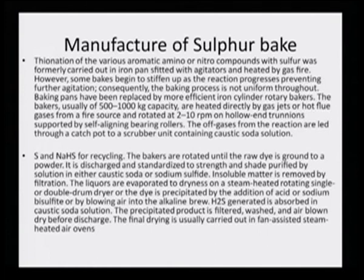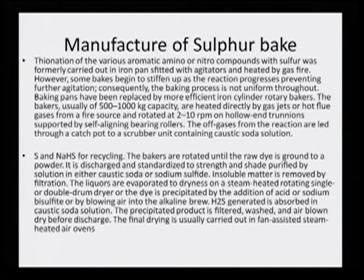The raw dye is discharged and standardized to strength and shade, purified by solution in either caustic soda or sodium sulphite, and insoluble material is removed by filtration. The liquors are evaporated to dryness on a steam-heated rotating single or double drum dryer. The dye is precipitated by addition of acid, sodium bisulphite, or by blowing air into the alkaline brew. Hydrogen sulphide generated is absorbed in caustic soda solution, because it not only creates a bad smell but is harmful to inhale. The precipitated product is filtered, washed, and air-blown dry, and final drying is carried out in fan-assisted steam-heated air ovens.